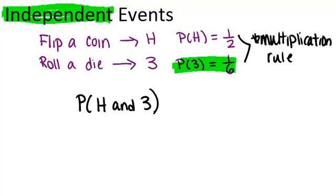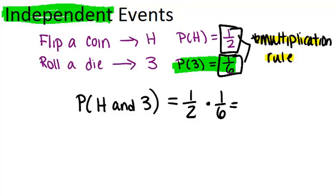The probability of getting heads and a three will just be the product of the two individual probabilities, and that only works because the two events are independent from one another. So this multiplication rule only works for independent events. Because they're independent in this case, it means I can just multiply one-half and one-sixth in order to figure out the probability of winning by getting heads and three, and you get one-twelfth.